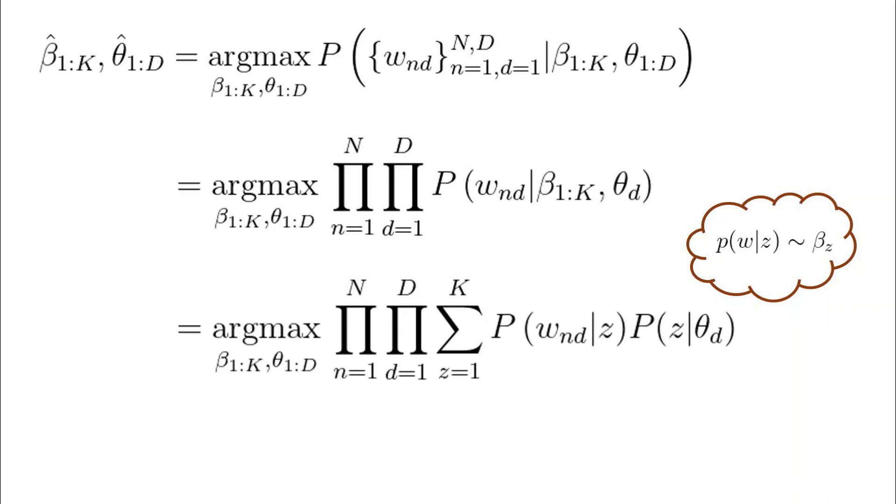And now we have a mathematically concise solution to our inference problem. We just have to find the maximum of this expression with respect to all the theta and beta vectors.